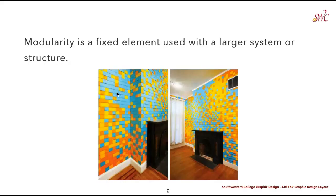Modularity is a fixed element that is used within a larger system or structure. Here we can see an example of a wall filled with post-it notes. This is a great example of modularity because post-it notes are all the same size and they can be overlapped. When they are, we begin to see an overall pattern from all of these post-its put together, rather than the singularity of each individual post-it note. That's really the idea of modularity.